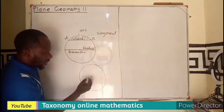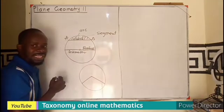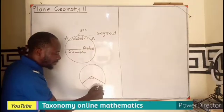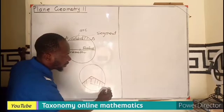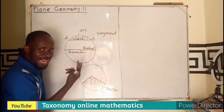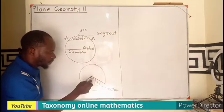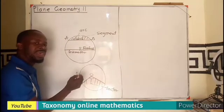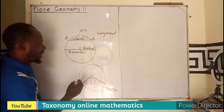Now, if two radii are inclined at the center — that is, you have one radius and another radius forming an angle at the center — the region between the two radii and the arc is what we call a sector. If the arc is smaller in length, this becomes a minor sector; the larger region becomes the major sector.